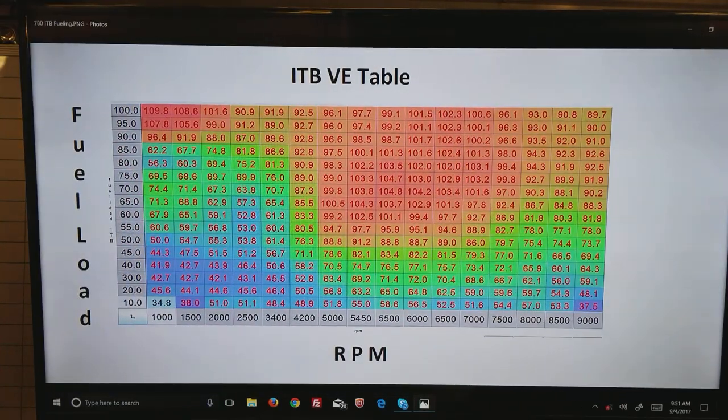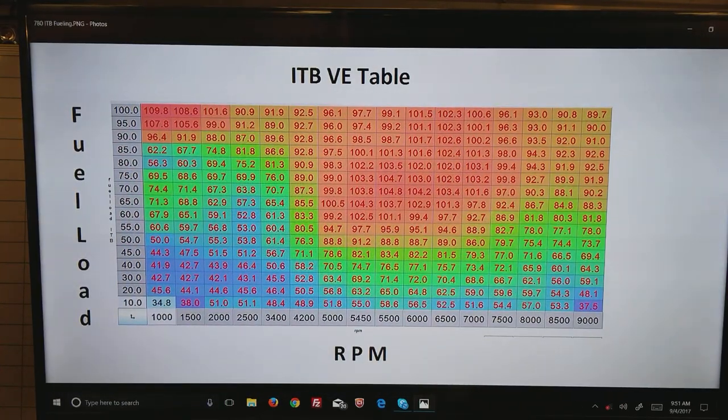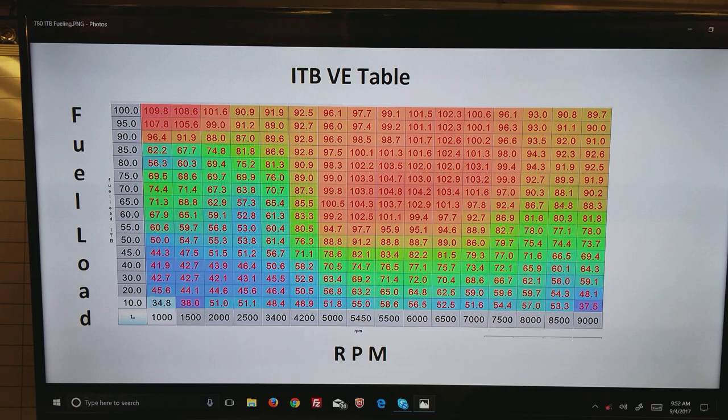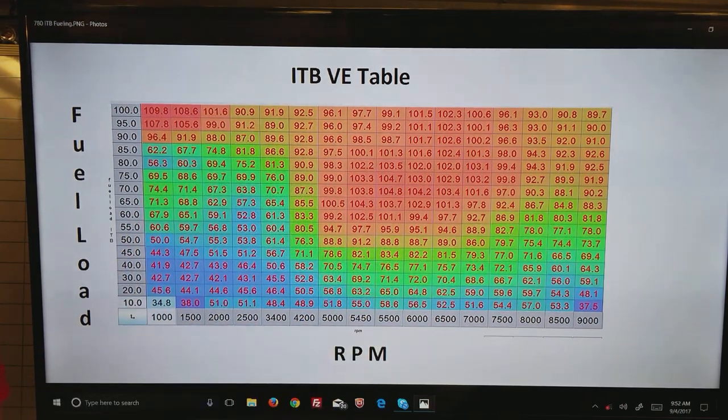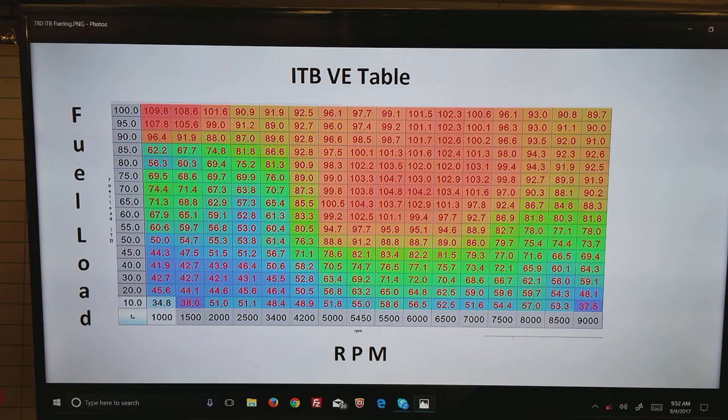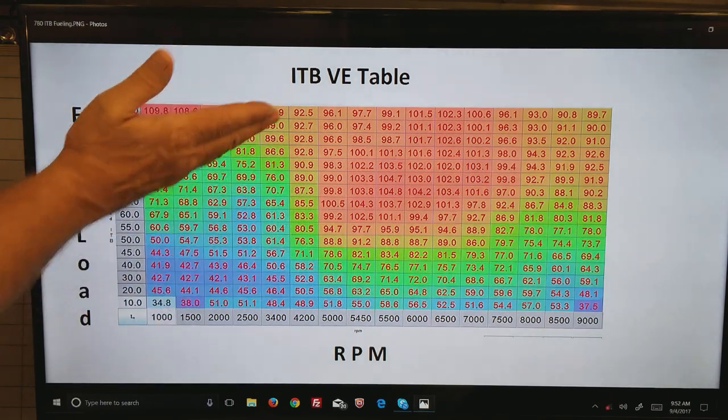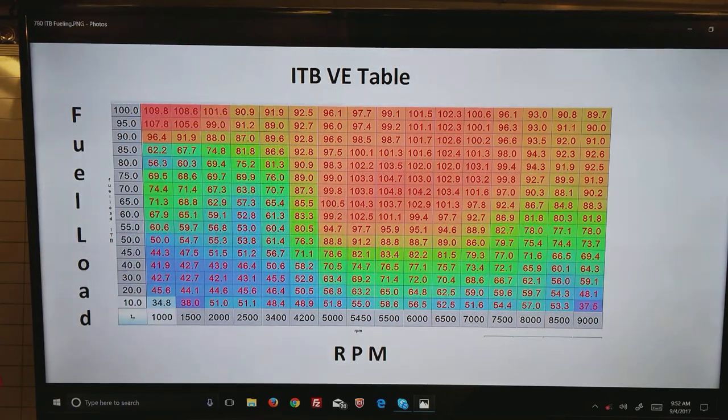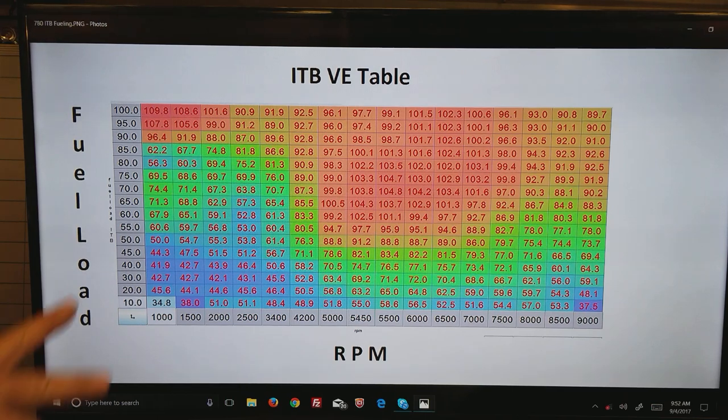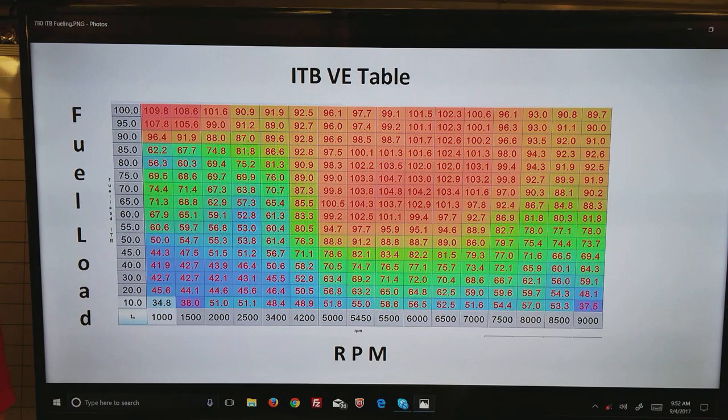There's also a tuning method known as ITB, which is independent throttle body. This is similar to what motorcycles have, where in the bottom left corner, for the most part, or the bottom half, you're really watching the manifold air pressure. On the top half, you're watching the throttle position, and in the middle it's a blend that's handled within the ECU.